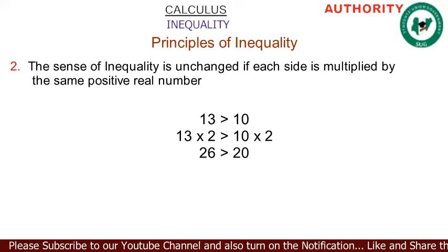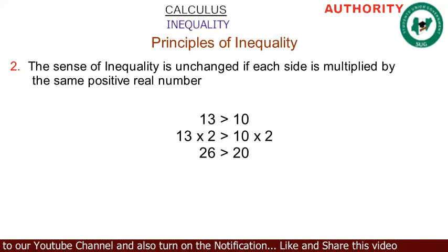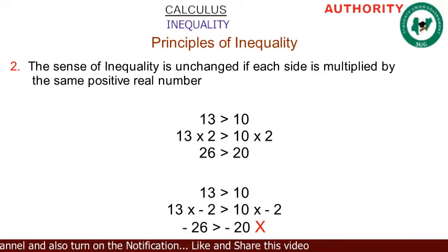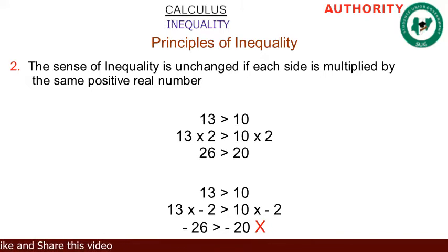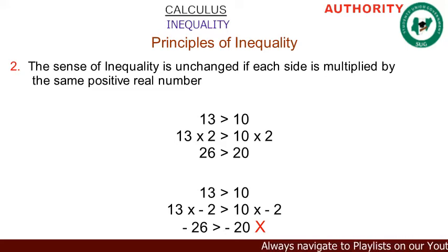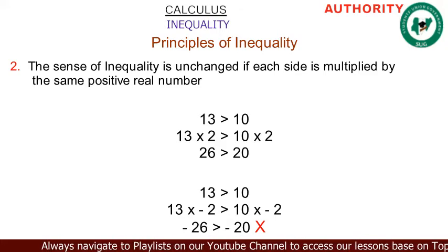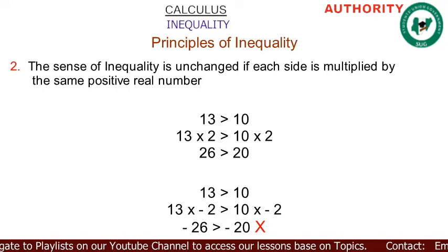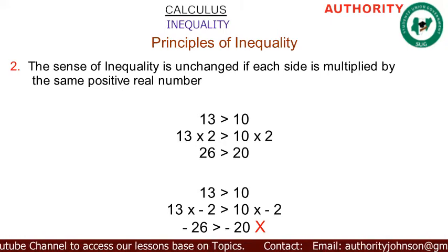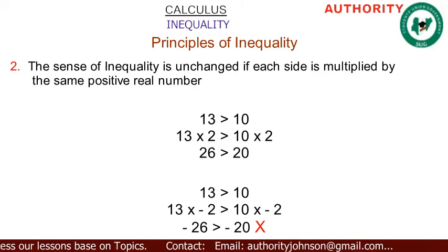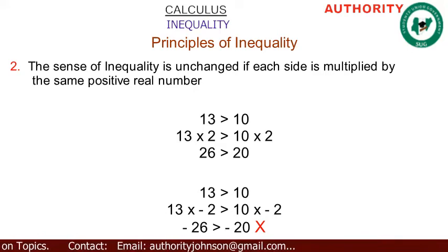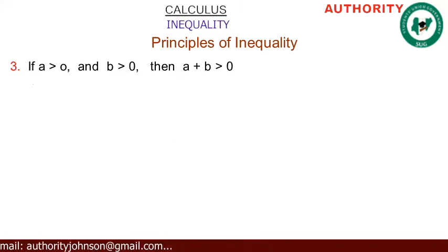But what if the inequality is multiplied by a negative number? Take 13 > 10, multiply both sides by −2: 13 × (−2) = −26 and 10 × (−2) = −20. We would get −26 > −20, which is wrong. So when you multiply an inequality by the same negative number, the sense changes. Likewise, dividing by a negative number also changes the sense.